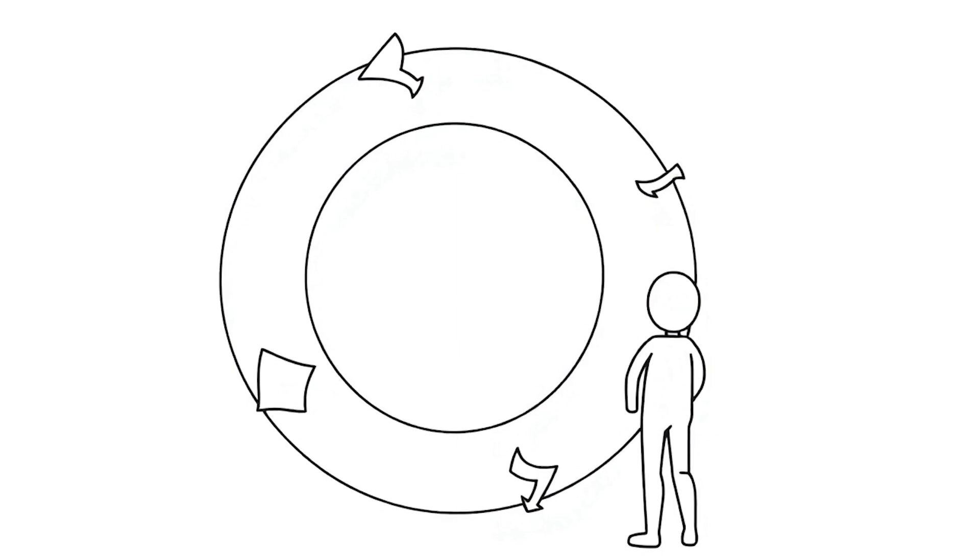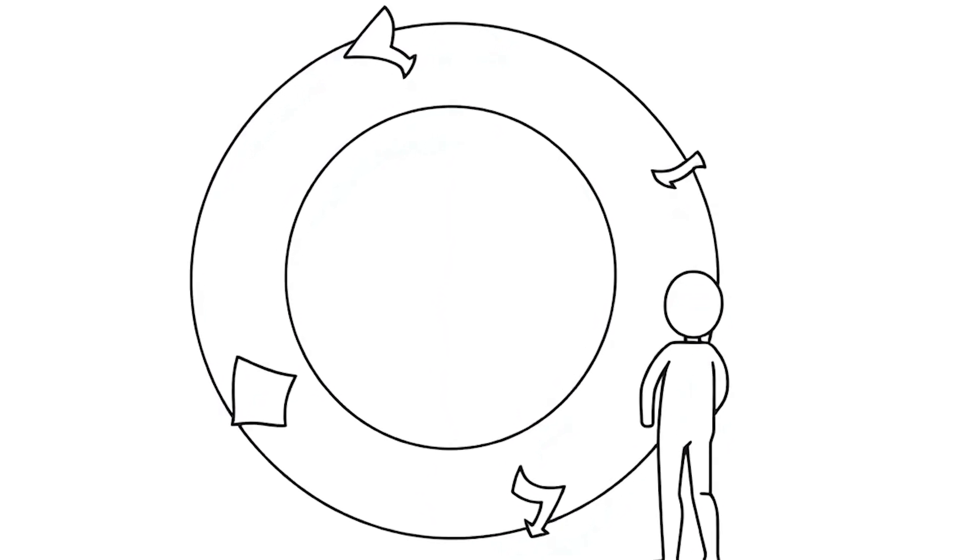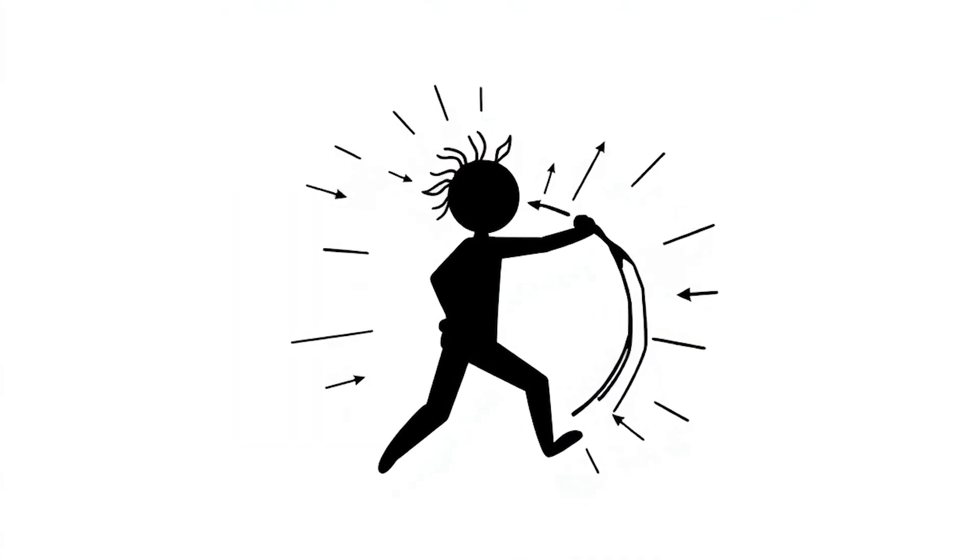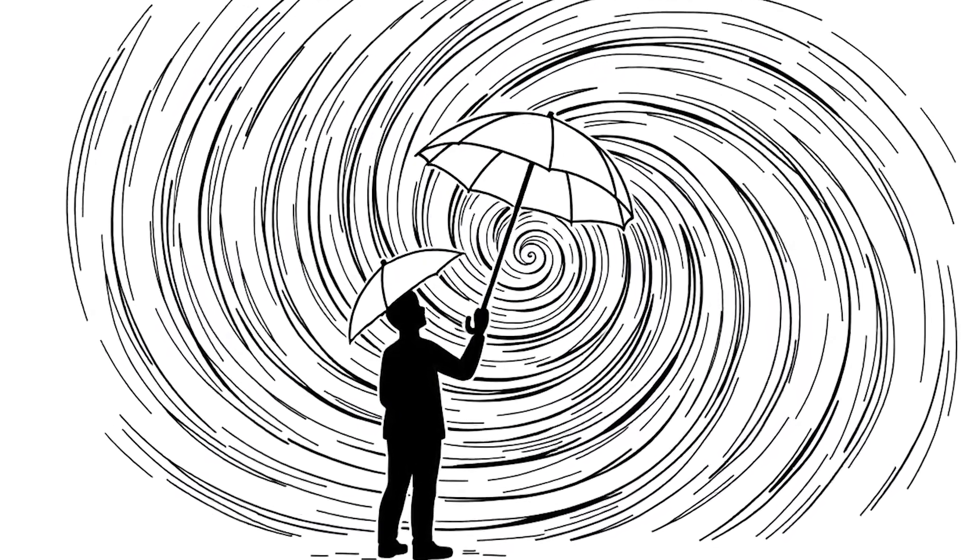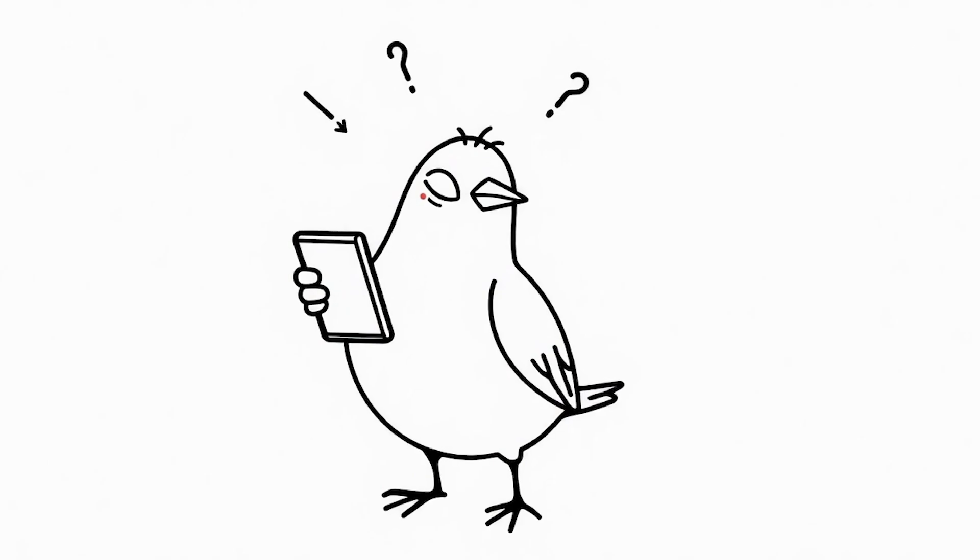First off, our donut Earth would spin like a giant wheel in space. The hole in the middle would shoot out powerful airstreams, creating constant super storms. These winds would be so strong that birds might need GPS just to find their way home.